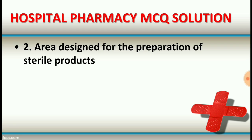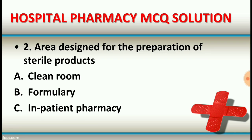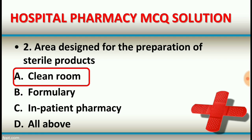Question number two: An area designed for the preparation of sterile products. Option A: clean room. Option B: formulary. Option C: inpatient pharmacy. Option D: all of the above. The right answer is option A, clean room. The area designed for sterile product preparation is the clean room — also called the aseptic room.